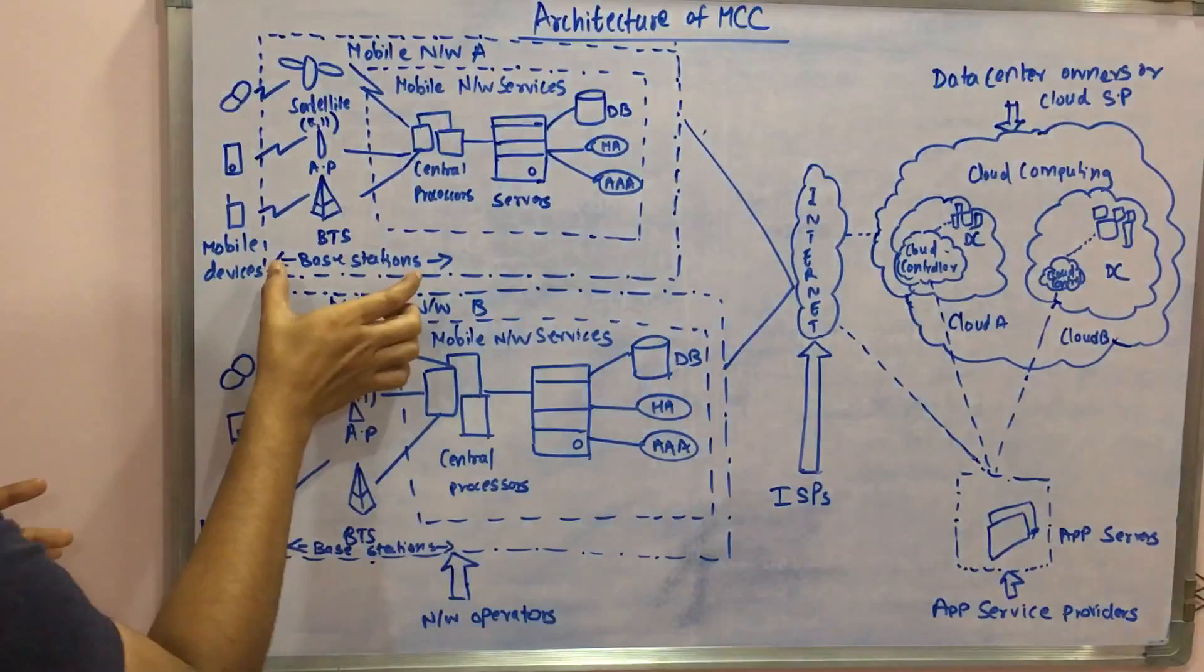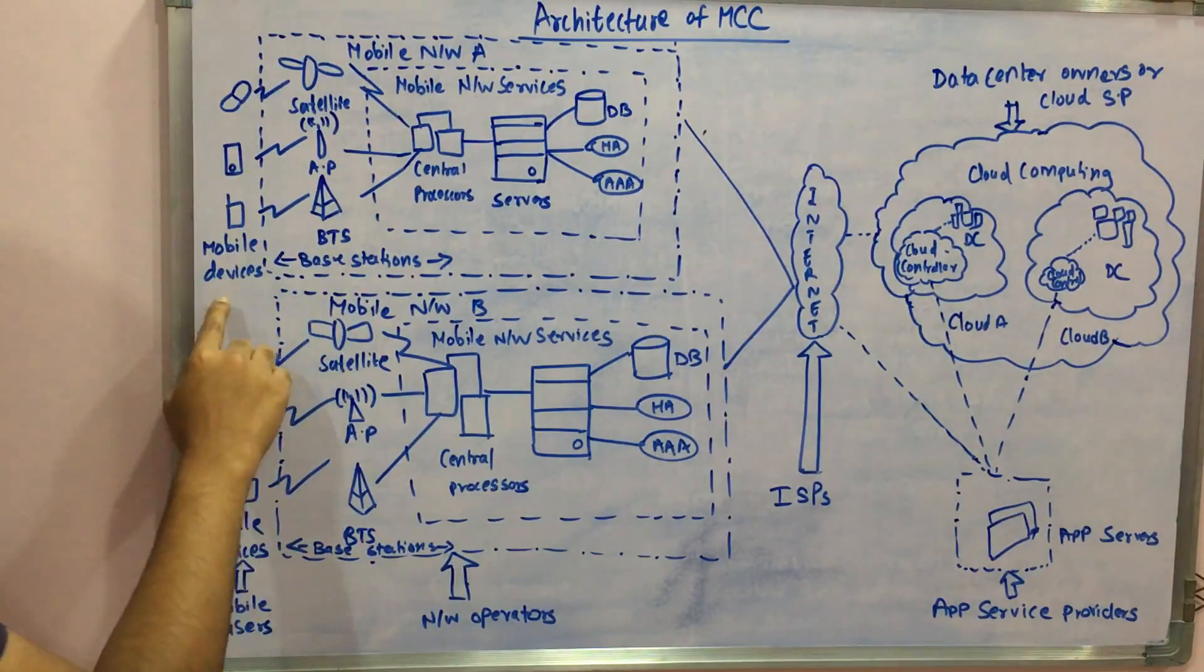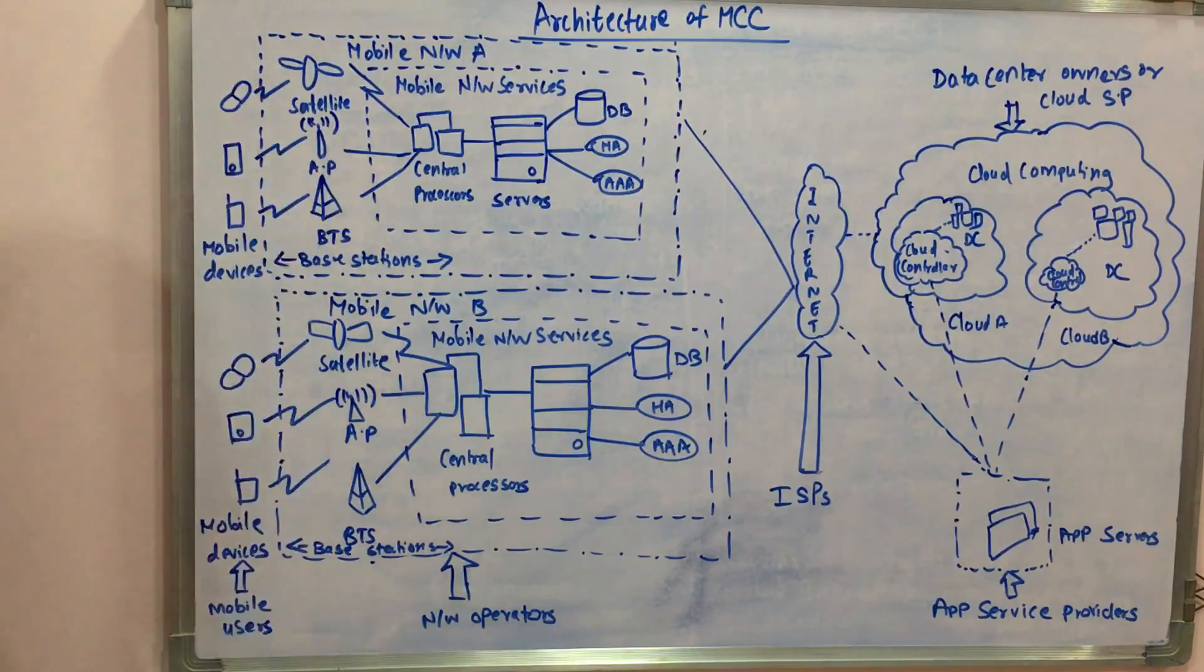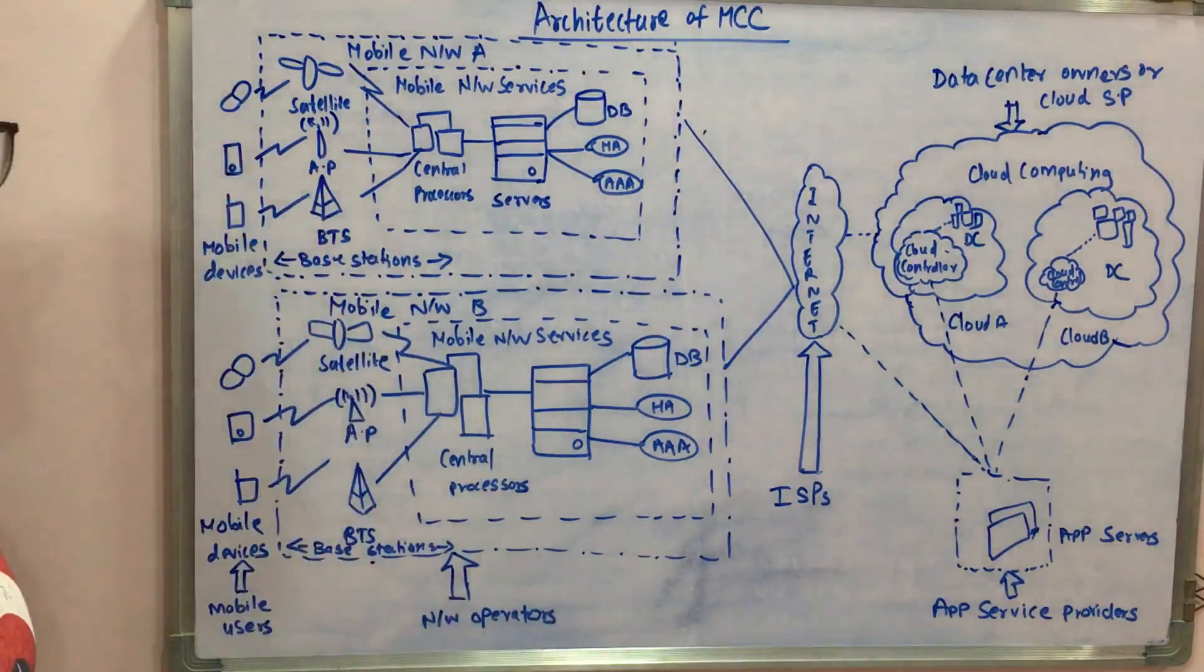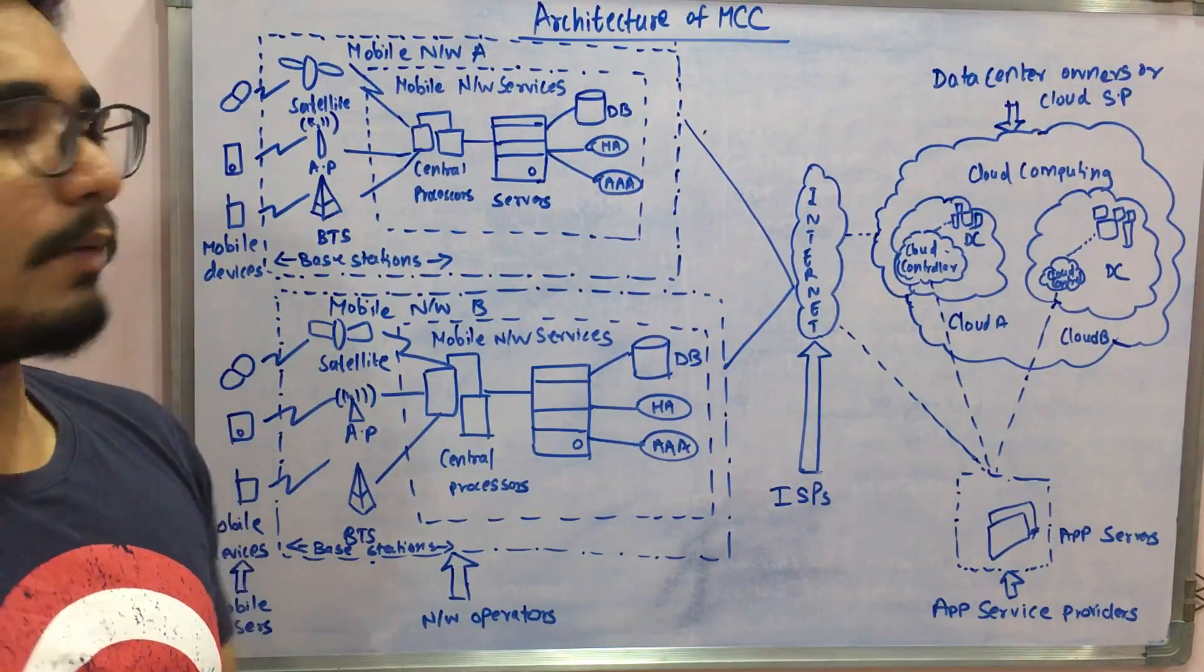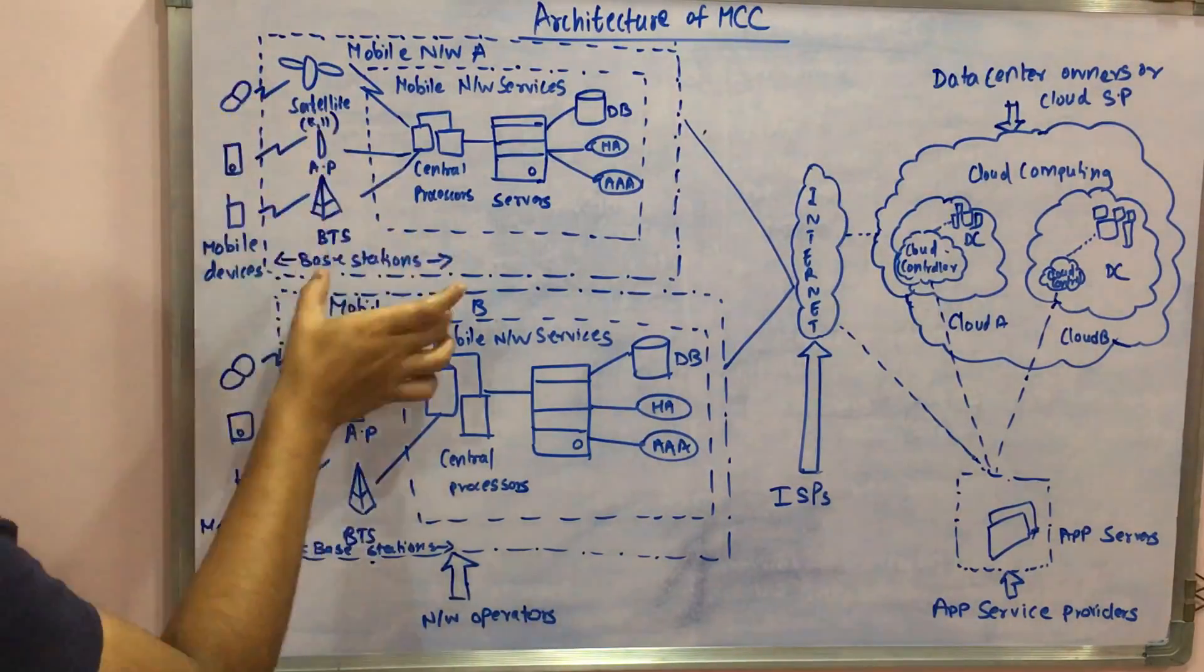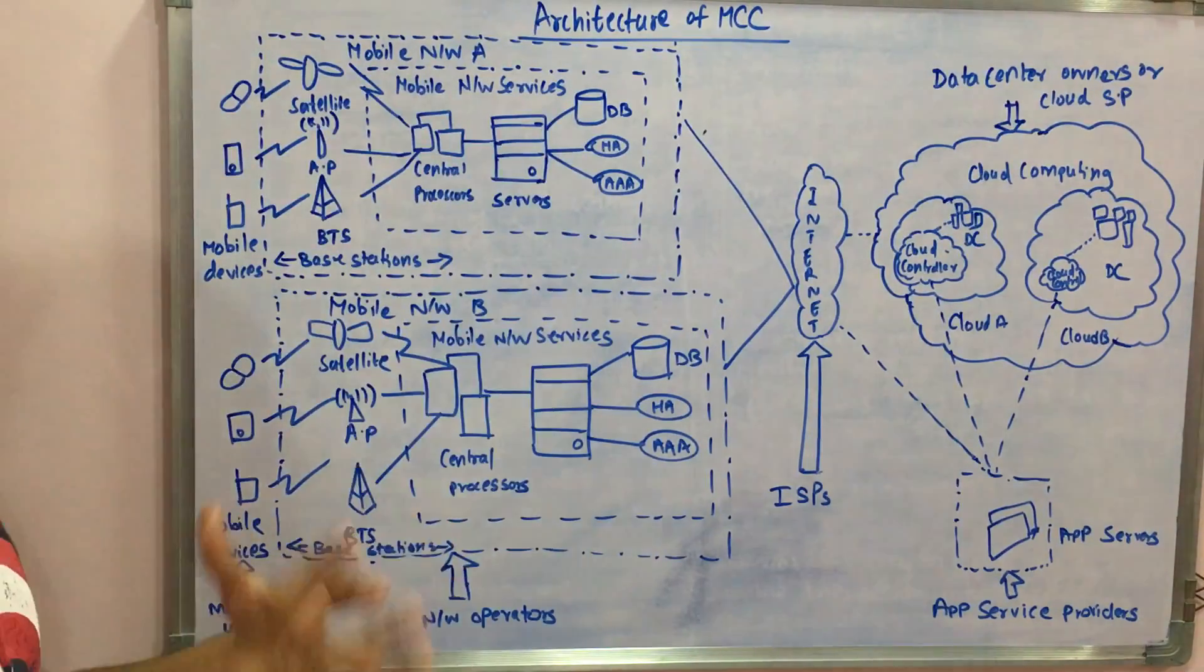First of all you have the base station. These are all the base stations. Base stations connect mobile devices - these are the mobile devices, it could be some personal digital assistant, your smartphone, a point of sale device for online transactions or e-commerce sites. Base stations connect these mobile devices to the mobile network services.